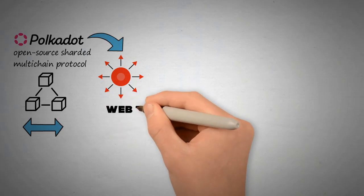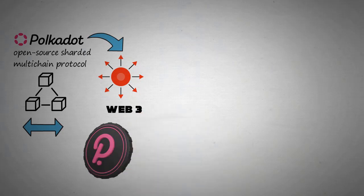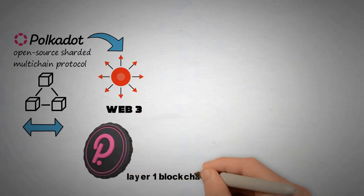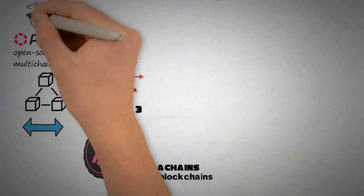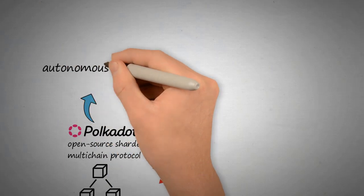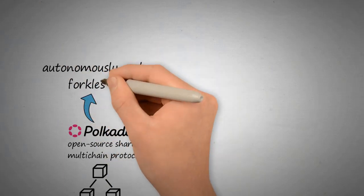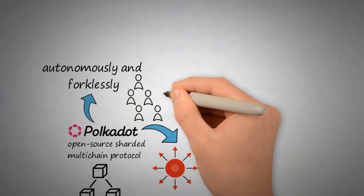Polkadot is known as a layer-zero meta-protocol because it underlies and describes a format for a network of layer-one blockchains known as parachains, or parallel chains. As a meta-protocol, Polkadot is also capable of autonomously and forklessly updating its own codebase via on-chain governance according to the will of its token-holder community.